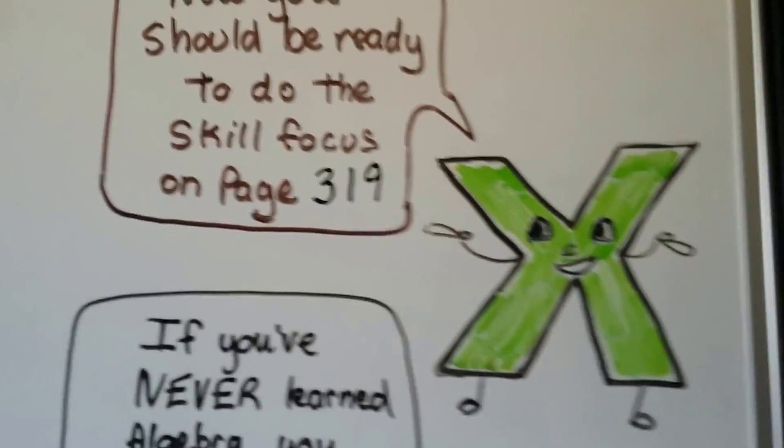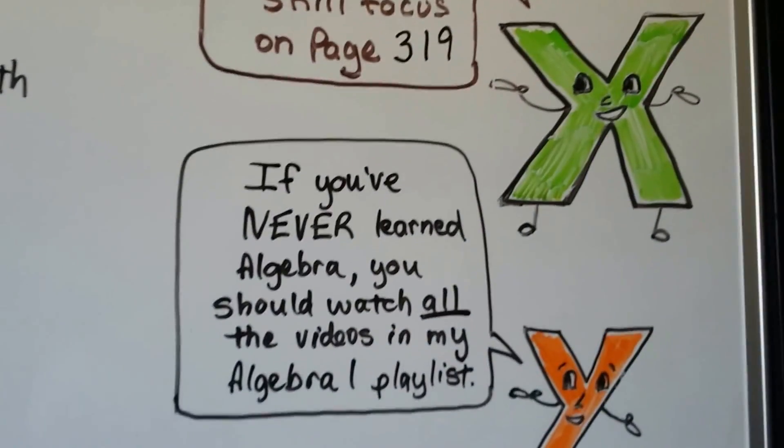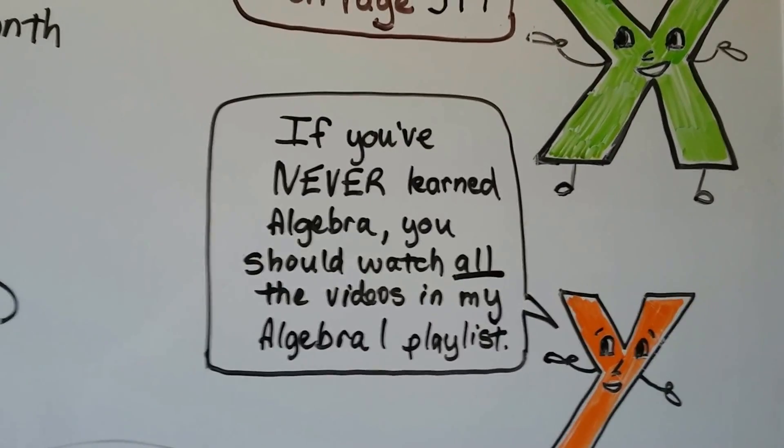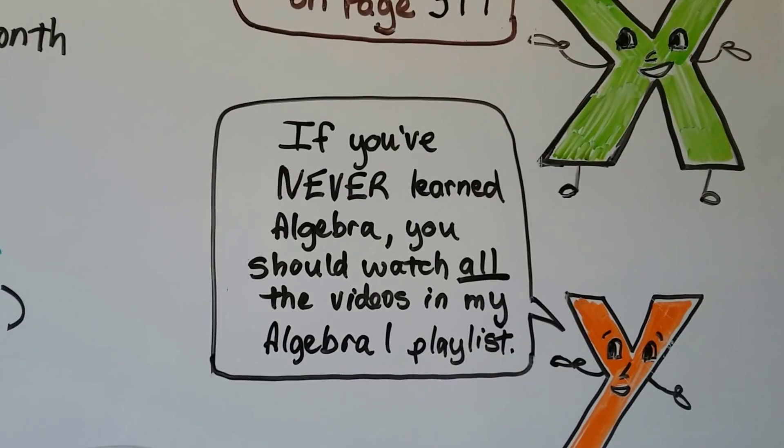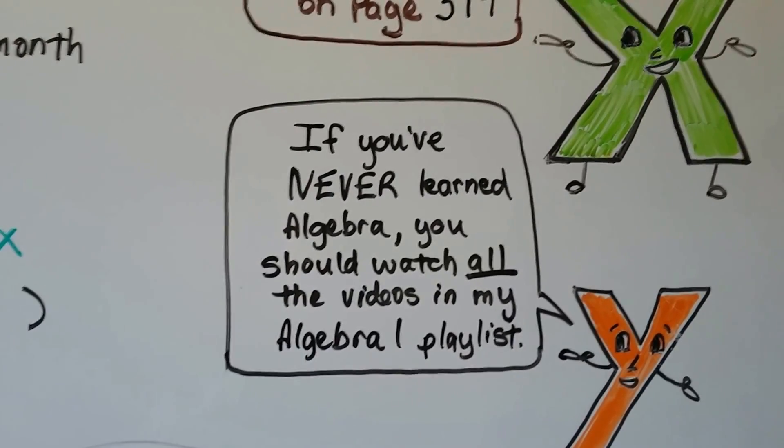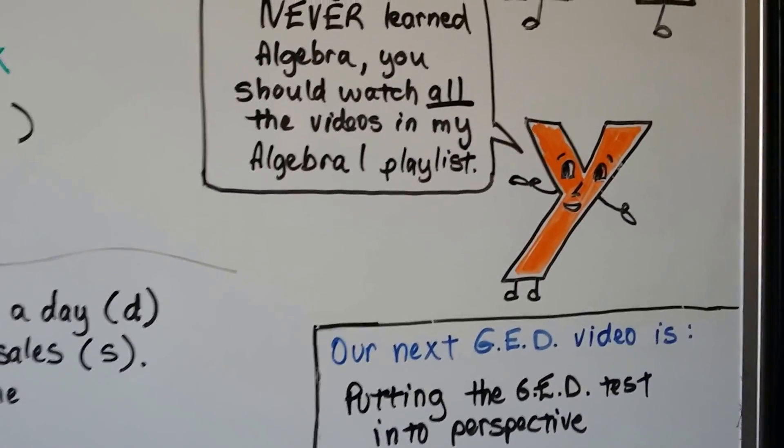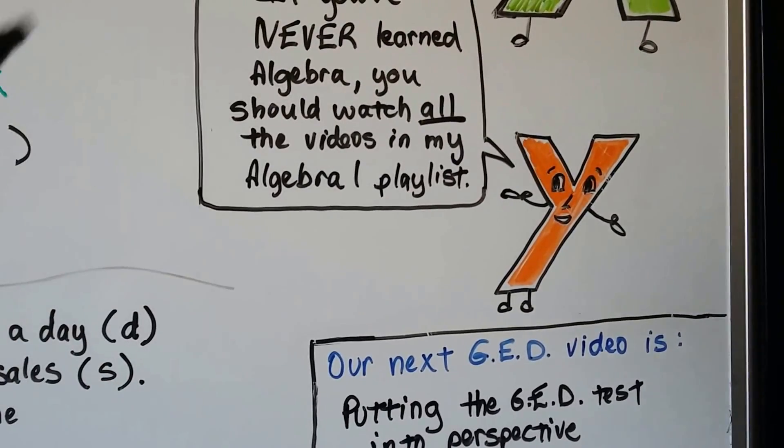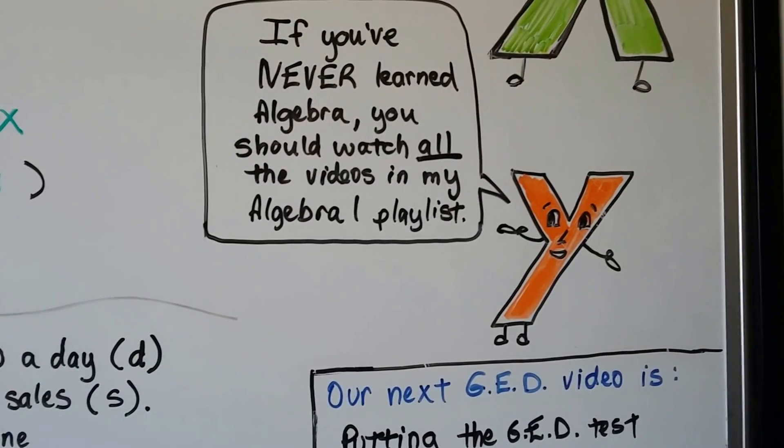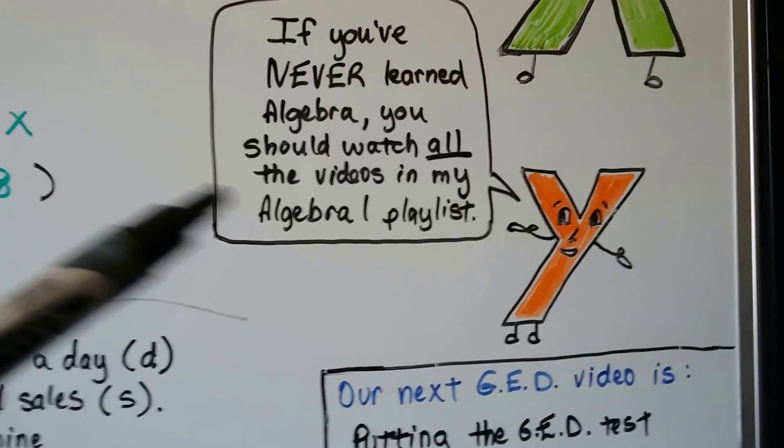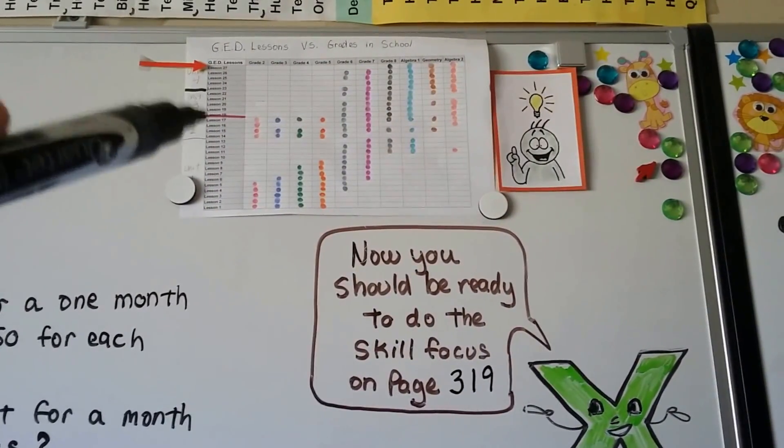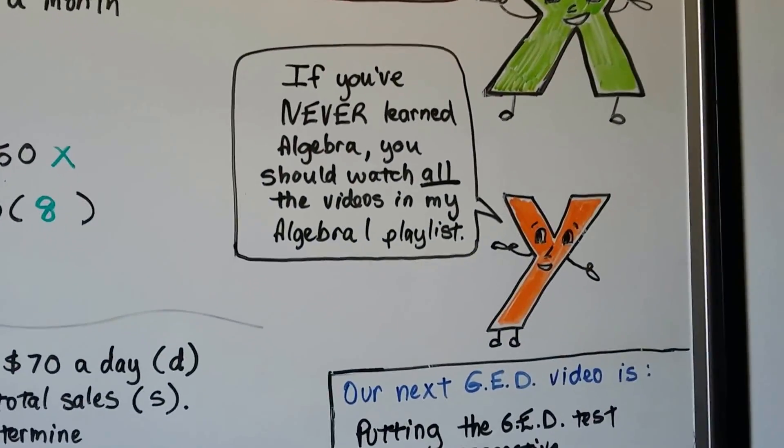You should now be ready to do the skill focus on page 319. If you've somehow happened into this video and you've never really learned algebra before, let's say you went to your freshman year of high school when you dropped out and you never really learned algebra, this is going to be very difficult to learn all of this in this playlist. My advice to you is to go back and watch my entire Algebra 1 playlist and start from scratch. I'm going to explain more about this in the next video. We're going to talk about putting the GED test into perspective and what you're expected to learn compared to students that go to school year-round and graduate from high school regularly. If you did take algebra in high school and maybe you got to the middle of your junior year or your senior year and then you dropped out and that's why you're taking the GED, then this GED playlist will probably help you. But, if you don't know algebra and you've never learned it, I highly doubt that five little lessons in a GED book are going to teach you everything that another student learned over years. It's not fair to you.